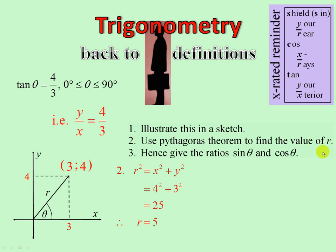Finally, hence, give the ratio sin theta cos theta. Well, sin theta is Y over R. Cos theta is X over R. Here we are. Sin is Y over R, 4 fifths. Cos is X over R, 3 fifths. Thank you.